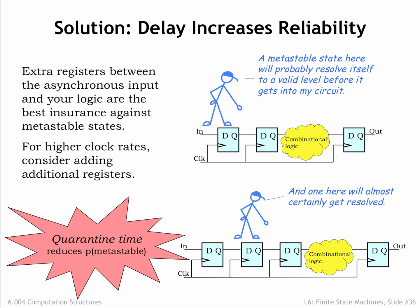The bottom line? We can use synchronizing registers to quarantine potentially metastable signals for some period of time. Since the probability of still being metastable decreases exponentially with the quarantine time, we can reduce the failure probability to any desired level. Not 100% guaranteed, but close enough that metastability is not a practical issue if we use our quarantine strategy.